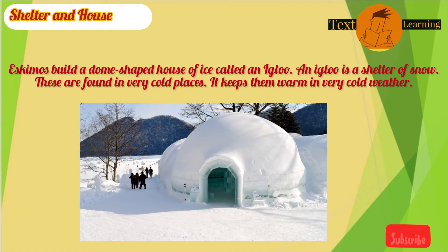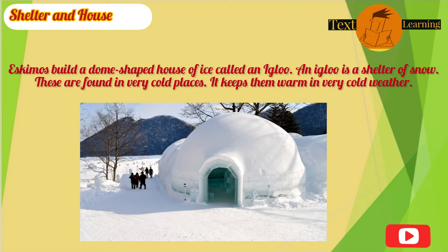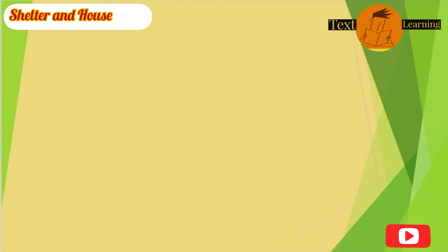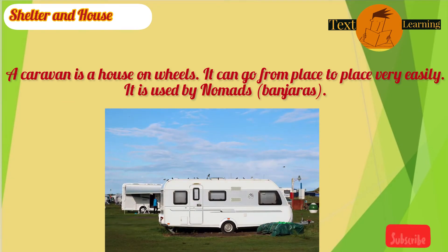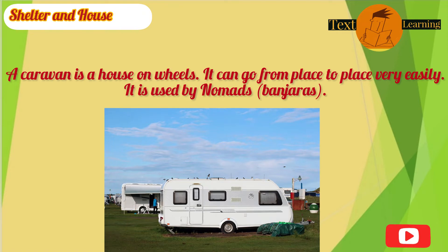Eskimos build a dome-shaped house of ice called an igloo. An igloo is a shelter of snow. These are found in very cold places and keep them warm in very cold weather. A caravan is a house on wheels. It can go from place to place very easily. It is used by nomads or banjaras.